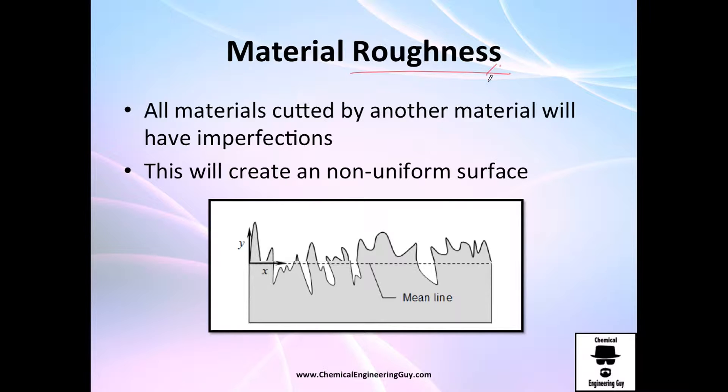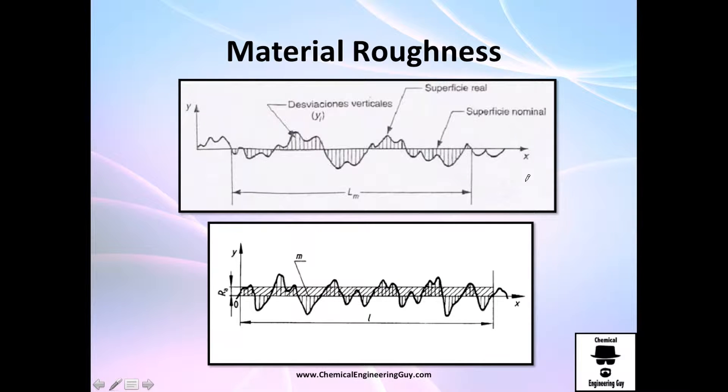Material roughness. Recall from last block, AFD2, we studied material roughness. It's essentially the nature of the material to be non-perfect. Its surface is not perfectly smooth. Actually, it has many non-uniform surfaces.